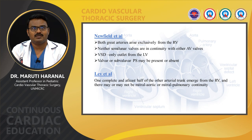A lot of controversies exist in its definition. According to Newfield et al., to define DORV, both great arteries should exclusively arise from the right ventricle, neither semilunar valves are in continuity with either AV valves, and the VSD is the only outlet from the left ventricle. Valvar or subvalvar pulmonary stenosis may be present or absent. According to Lev et al., one complete and at least half of the other arterial trunk should emerge from the RV, and there may or may not be mitral pulmonary continuity.